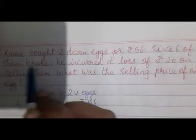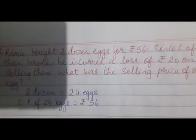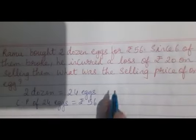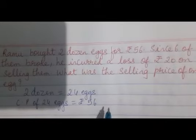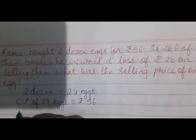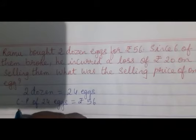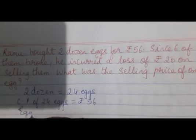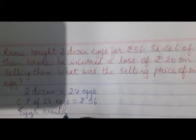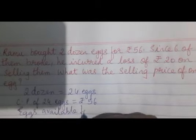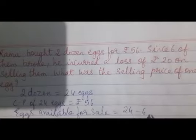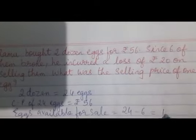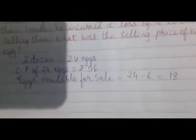Since six of them broke, he got a loss of Rs.20. How many eggs are available for sale? From 24, six are broken, so now only 18 eggs are there for selling.